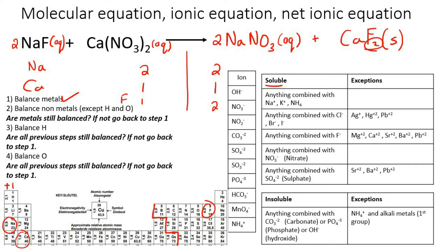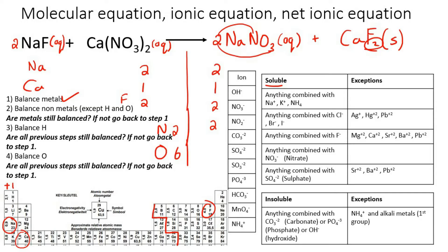The calciums are still balanced. The fluorines are now balanced. So now we can move on to the nitrogens — there are two on the left, and on the right-hand side there are two. Now we can move on to hydrogen — there aren't any — so let's go on to oxygen. On the left there are six oxygens, and on the right there are two times three, which is also six. So everything is balanced.